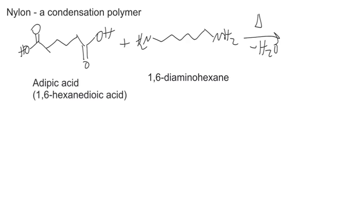All right, now we're going to look at another condensation polymer, nylon, that you're going to work with in the lab. So we start with adipic acid, which is just 1,6-hexanedioic acid. One, two, three, four, five, six. There's six carbons, and there's a carboxylic acid at each end. So 1,6-hexanedioic acid.